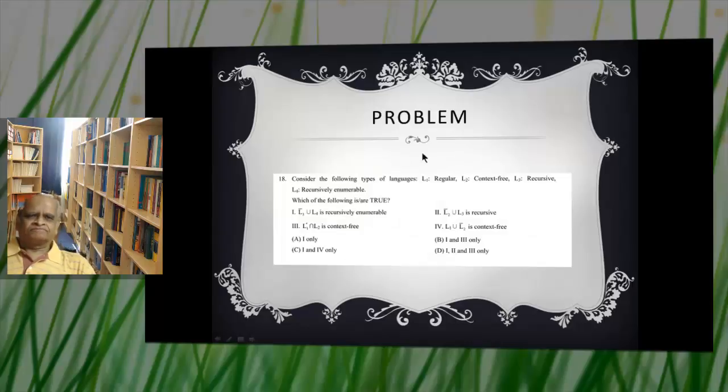Here is the problem. Question 18. Consider the following types of languages: L1 is a regular set, L2 is a context-free language, L3 is a recursive set, L4 is a recursively enumerable language. Which one of the following statements is true?